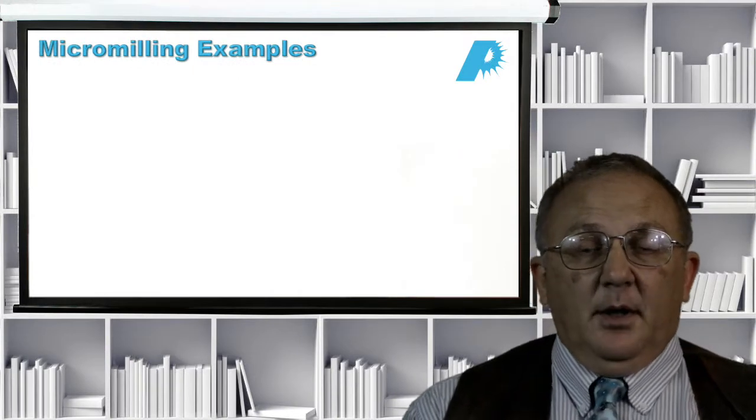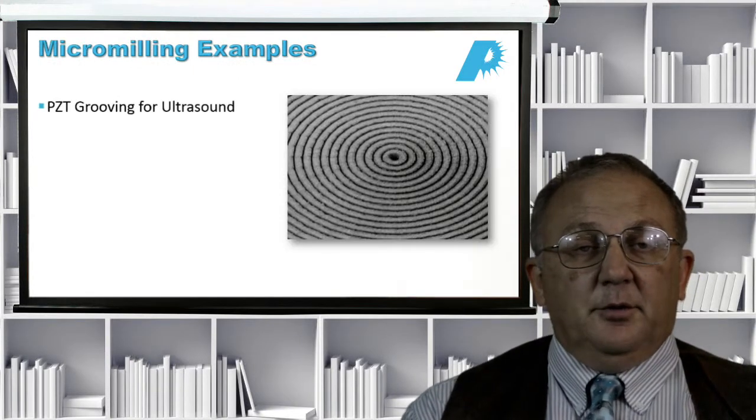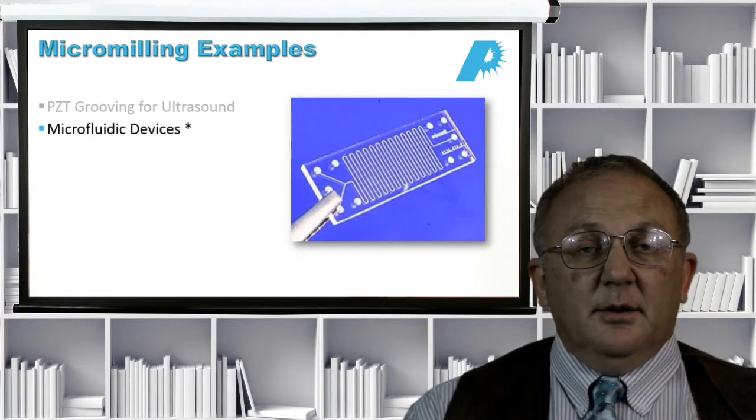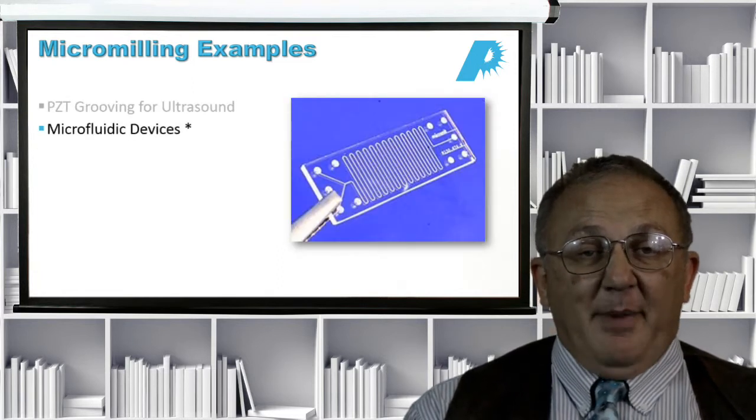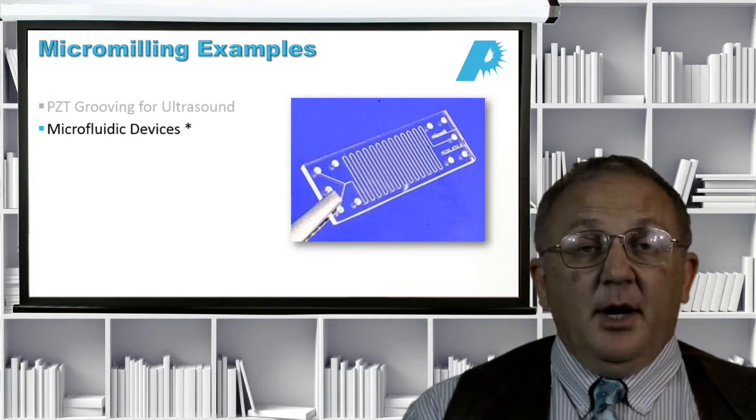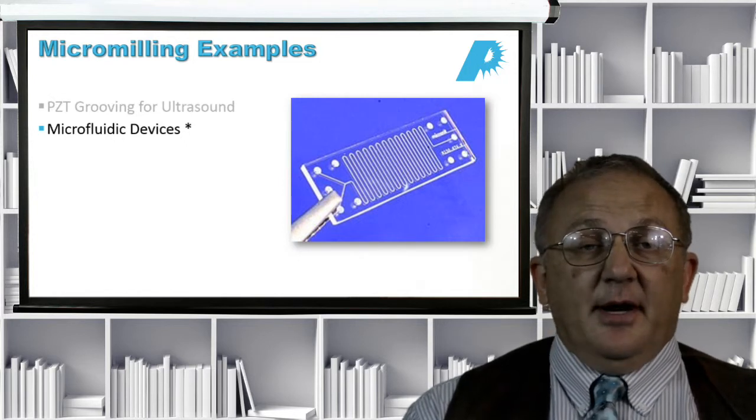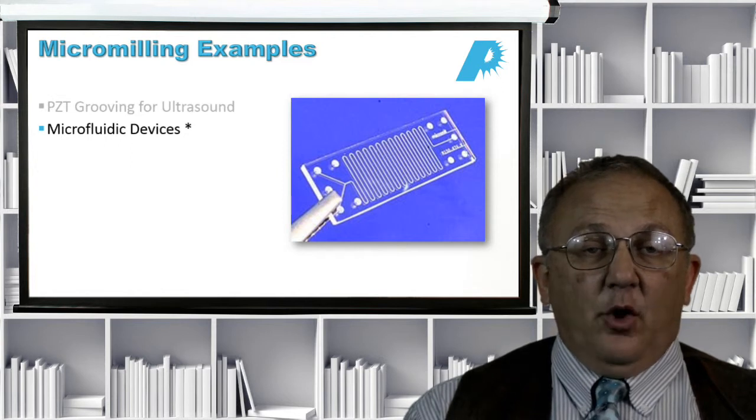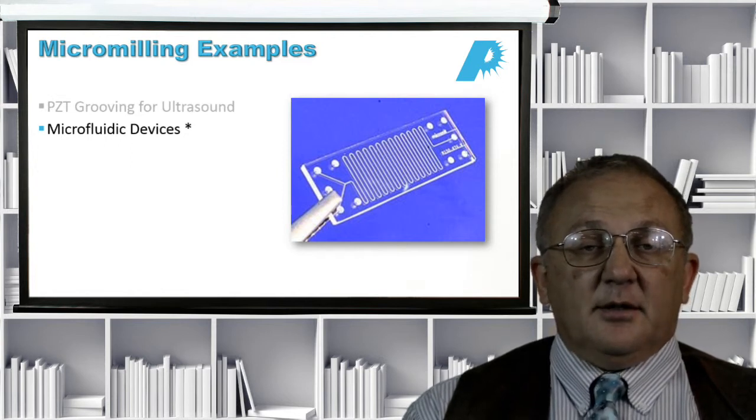So first let's talk about milling. Micro-milling examples include things like PZT grooving for ultrasound devices, grooving for microfluidic devices. And you'll notice that there's an asterisk there. Microfluidic devices are actually a very big and growing field. And we think this is going to be a very interesting area for laser manufacturing in the future.